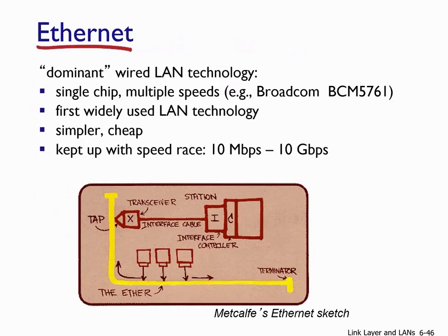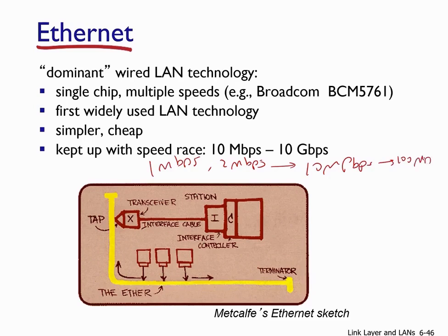Ethernet is the dominant wired LAN technology, implemented on a single chip, providing multiple speeds. It was among the first widely used LAN technologies, characterized by simplicity and low cost. Ethernet has kept up with the speed race: starting at 1 Mbps, then 2 Mbps, then 10 Mbps, 100 Mbps, 1 Gbps, and currently 10, 40, and even 100 Gbps.